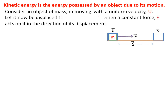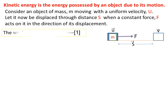Consider an object of mass m moving with a uniform velocity u. Let it now be displaced through distance s when a constant force f acts on it in the direction of its displacement, and its velocity becomes v. So we have taken an object of mass m moving with uniform velocity u, applied a constant force f on it, it displaced through distance s, and its velocity became v.